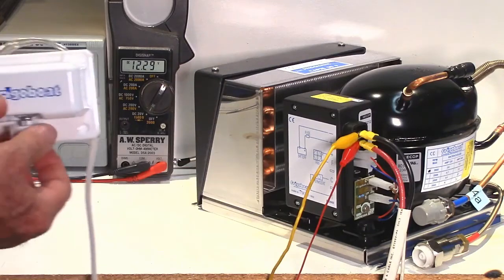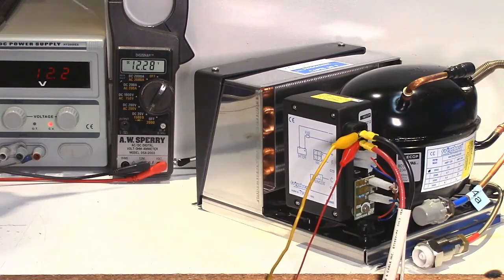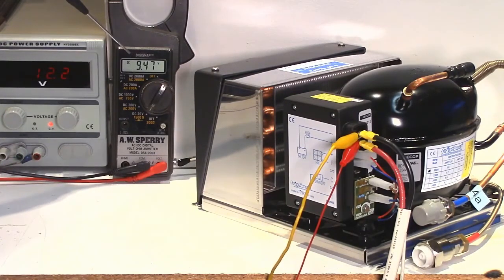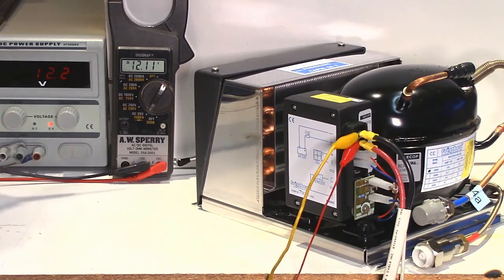So here we've got a thermostat and we'll turn the system on and immediately if you watch your meter here you'll see that it's gone down to under nine, under 10 volts and it's still 12.2 on the main voltmeter on your panel. So you wouldn't see that dip in the voltage when the compressor tries to start.